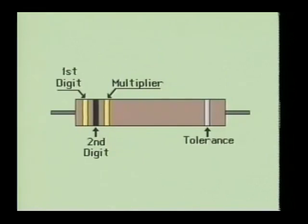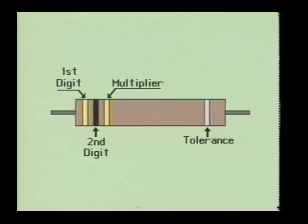In this program you will also learn how to read the color bands on a resistor. Resistors are used in almost every electronic circuit. The resistor will perform many functions, two of which are as current limiting devices and as voltage dividers in a circuit.